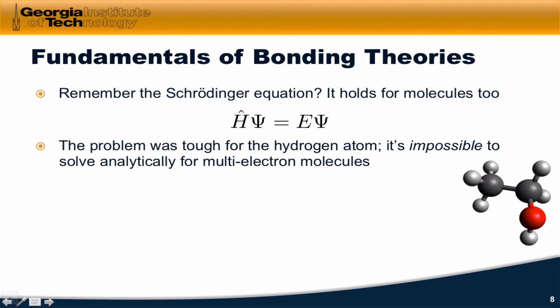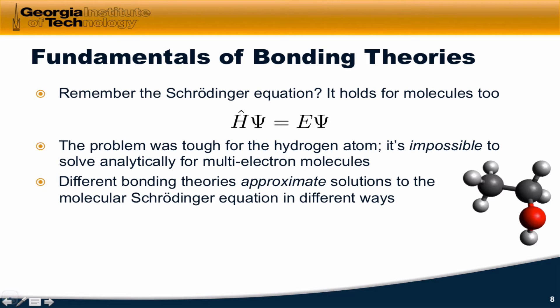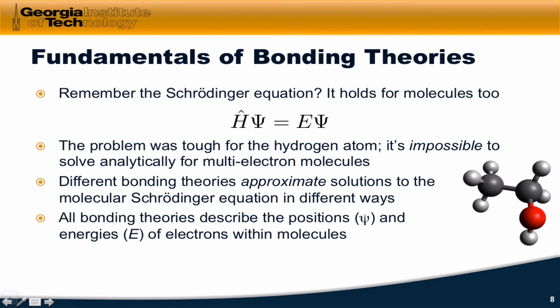It's downright impossible to solve analytically for multi-electron molecules — molecules that have more than one electron and more than one nucleus. To get around this problem, different bonding theories approximate the solutions to the molecular Schrödinger equation in different ways. They use various simplifications and approximations to get at wave functions that are more or less right, that more or less satisfy the molecular Schrödinger equation.